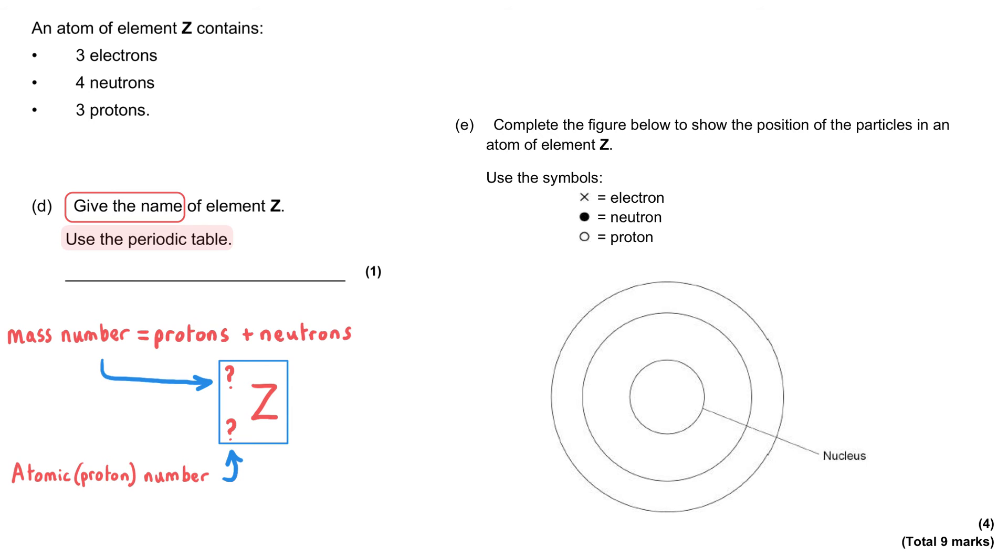Now the mass number is the number of protons added to the number of neutrons. So for element Z, it is three protons plus four neutrons, which gives us the mass number of seven. The atomic (proton) number tells us, unsurprisingly, the number of protons in an atom. So we've been told that element Z has got three protons.